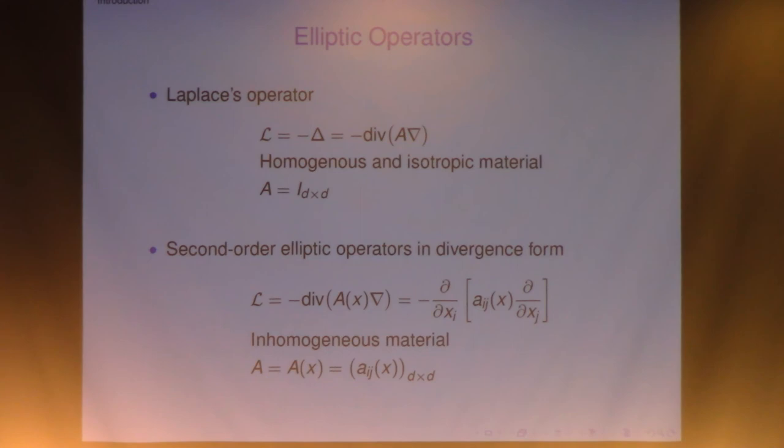Getting a little further, we can look at general second order elliptic operators in divergence form. I'm writing this as divergence A gradient, and then I write this out using the convention that repeated indices are summed. The indices i and j are both summed from 1 through d, d being the dimension here. So here you have a variable matrix, which can be used to describe properties of inhomogeneous material, meaning that when you move from point to point, the property of the material changes.